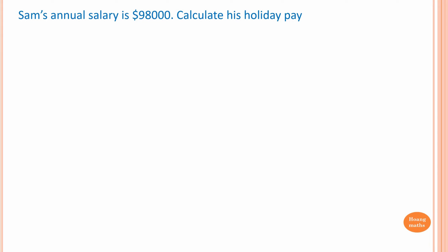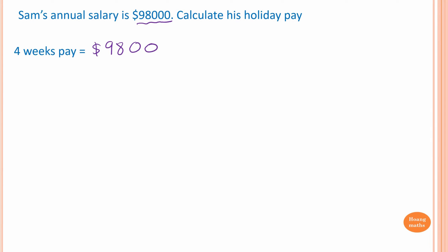We know Sam's annual pay is ninety-eight thousand dollars. To find his holiday pay we need four weeks pay plus 17.5 percent of four-week pay. We know Sam earned ninety-eight thousand dollars a year, so to work out four-week pay we go ninety-eight thousand divided by 52 — because there are 52 weeks in a year — to get one week's pay.